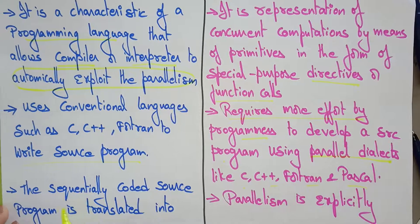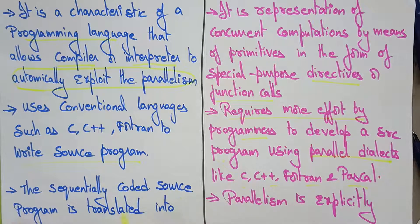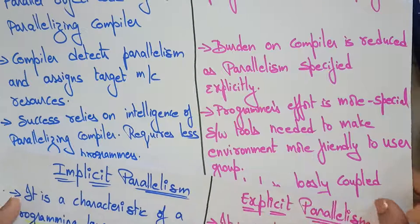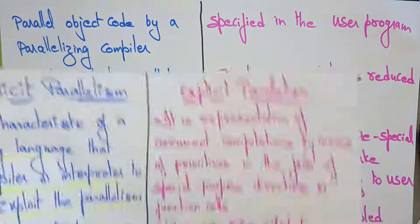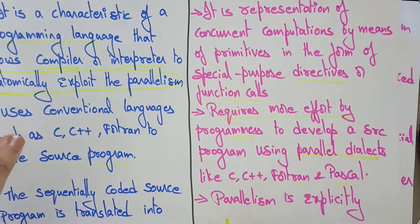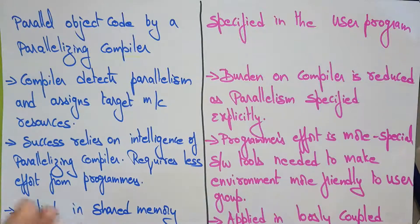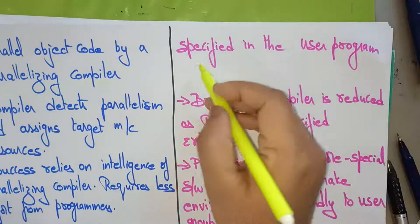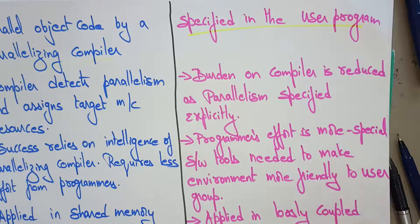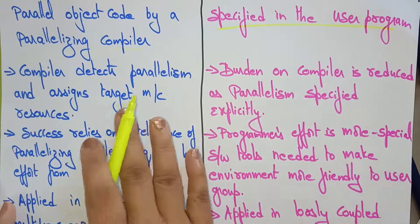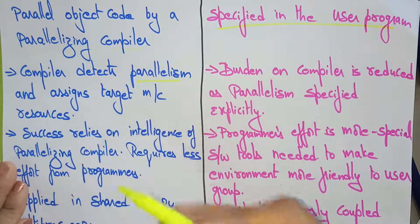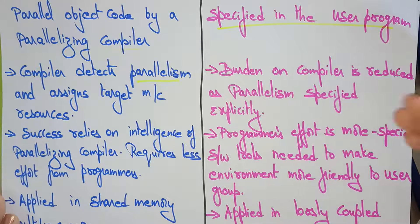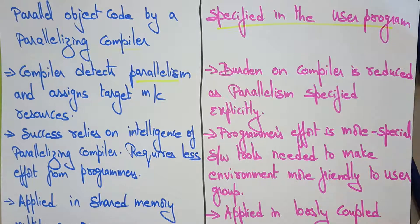In implicit parallelism, the sequentially coded source program is translated into parallel object code by a parallelism compiler. Whereas in explicit parallelism, the parallelism is explicitly specified in the user program itself. Another difference: in implicit parallelism, the compiler detects the parallelism — while compiling or interpreting, it automatically detects which instructions have to work in parallel.